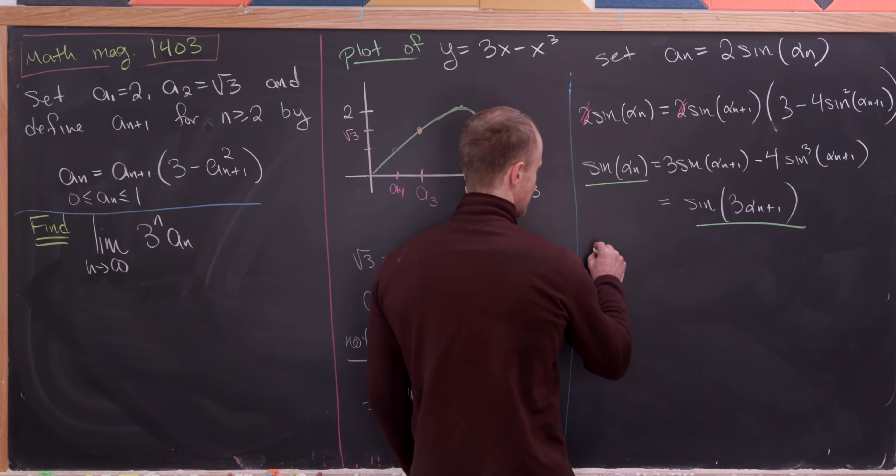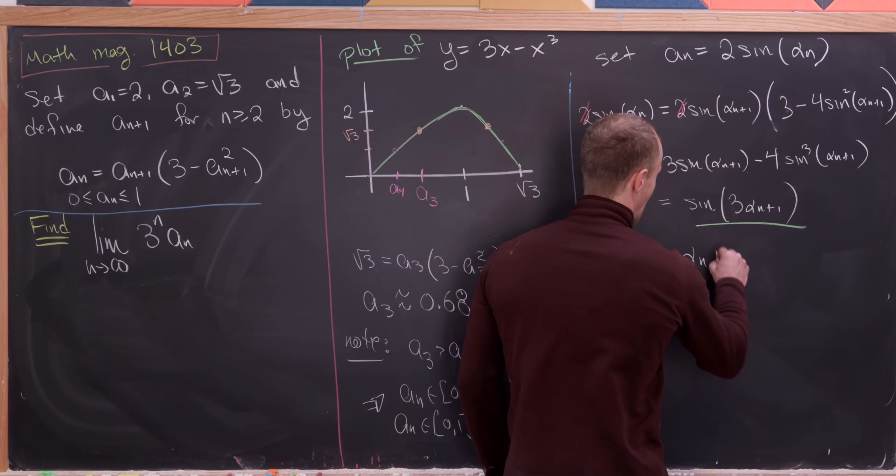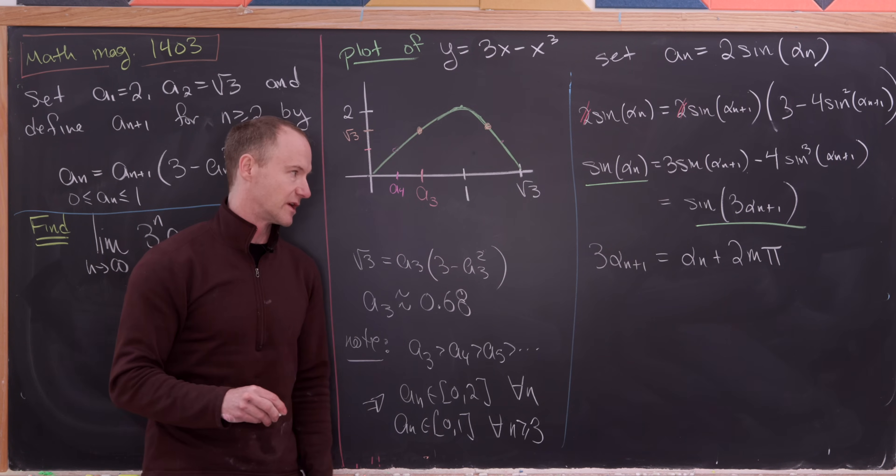So that tells us that 3 times alpha n plus 1 is equal to alpha n plus 2 times m times pi, because again, sine is 2 pi periodic.